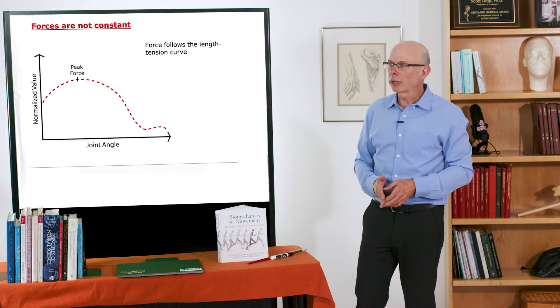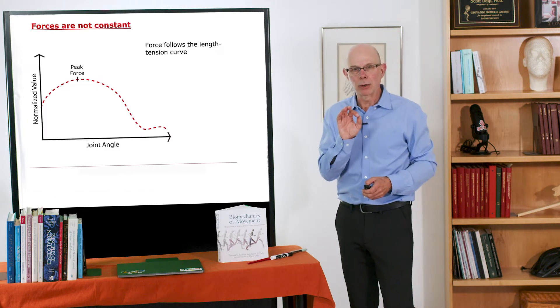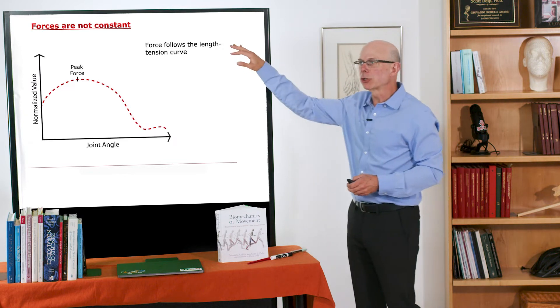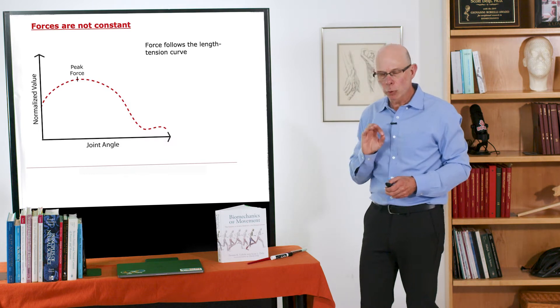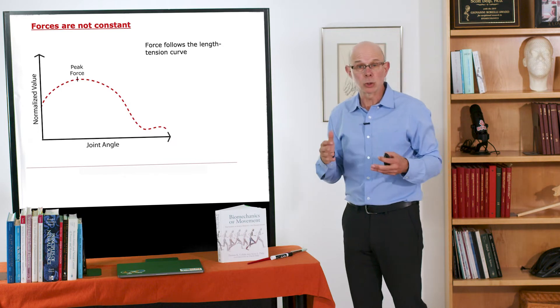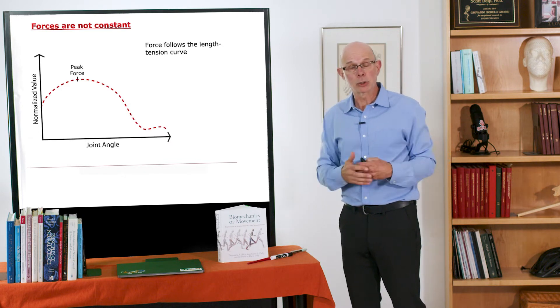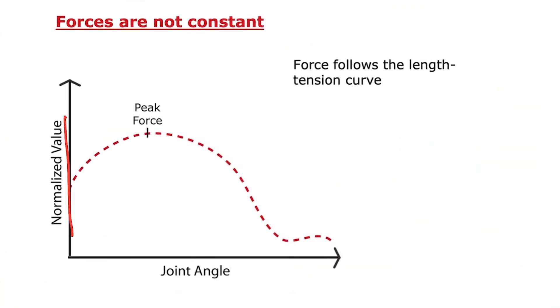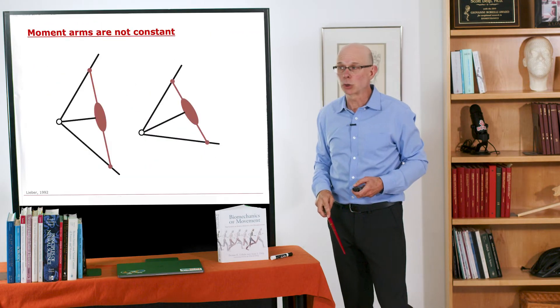A couple things important to consider here. Number one is as we go through a range of motion, forces are not constant. The force versus joint angle curve is determined by two things: one is the force-length curve of muscle, but then also how length is changing with joint angle. So what I'm plotting here is just a normalized value of force, and there's a peak force that is going to be when the muscle force peaks, and it changes with joint angle because the length is changing with joint angle. So force varies with joint angle.